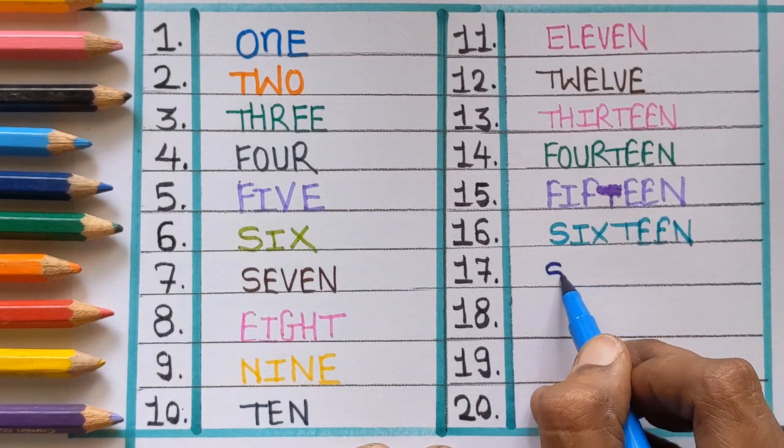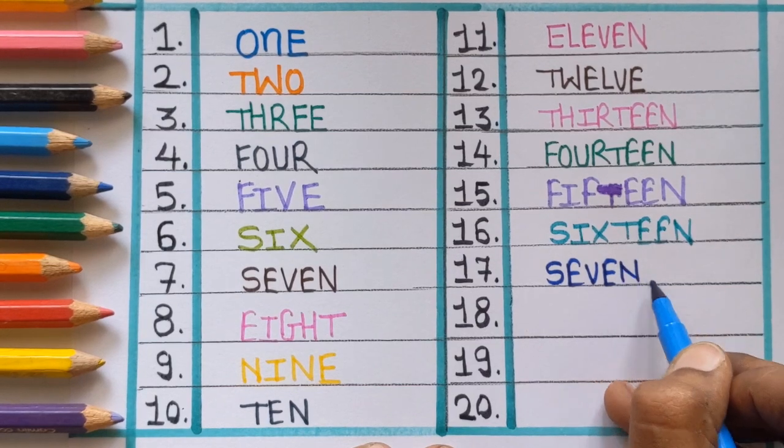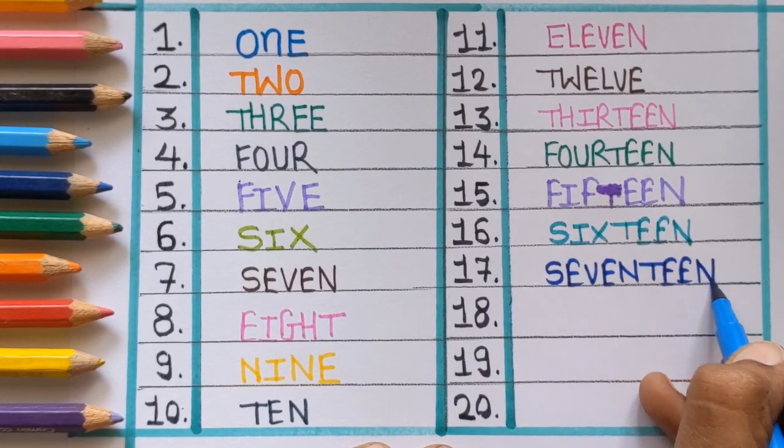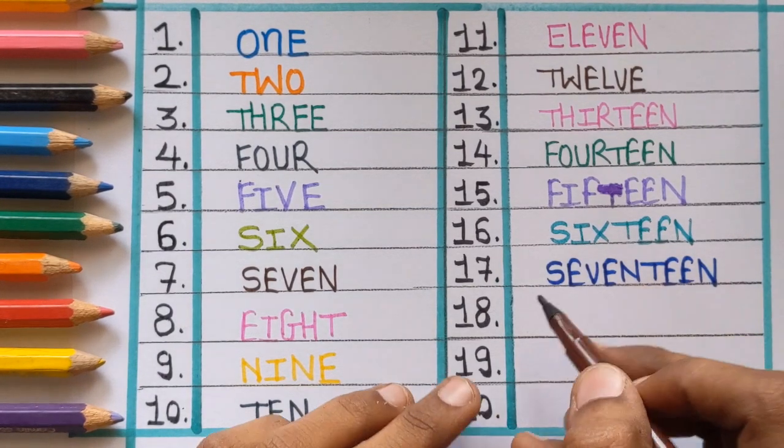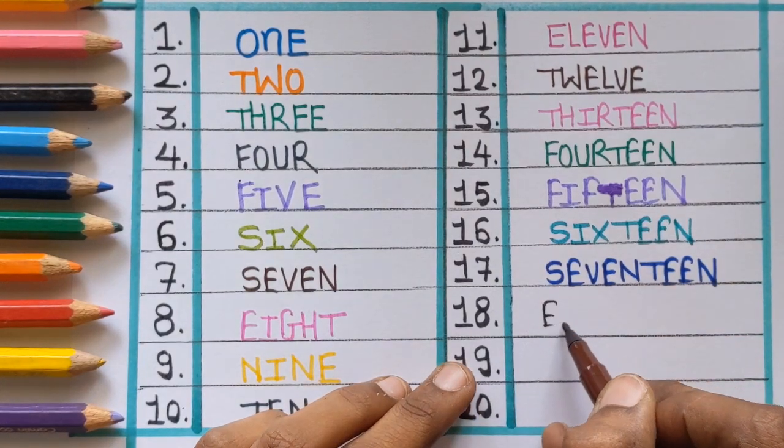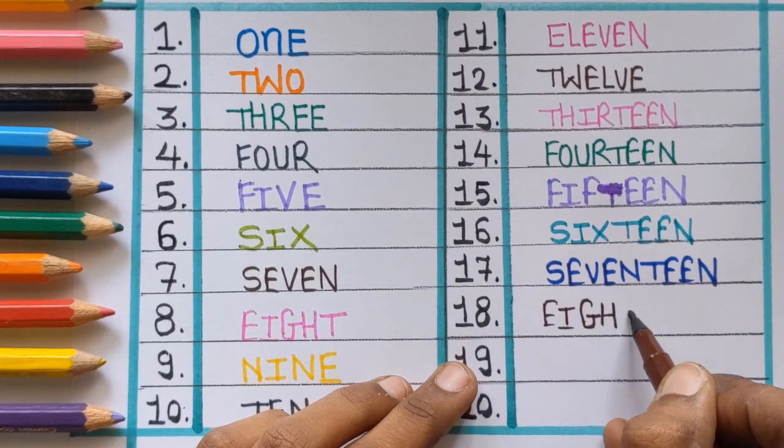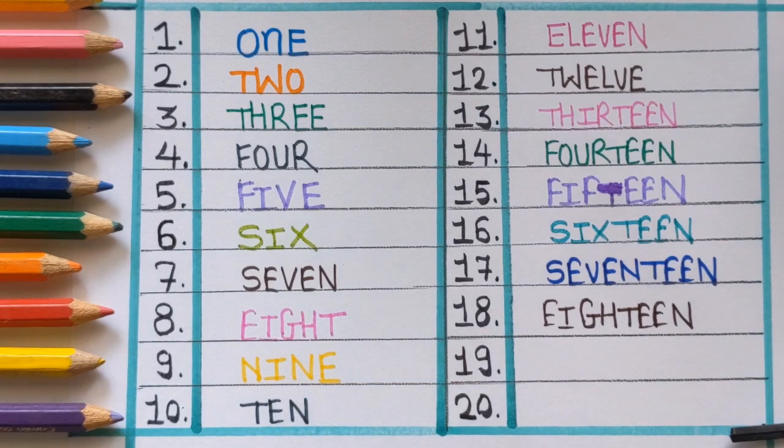Seventeen, S-E-V-E-N-T-double E-N, seventeen. Eighteen, E-I-G-H-T-double E-N, eighteen. After eighteen, next number is nineteen, N-I-N-E-T-double E-N, nineteen.